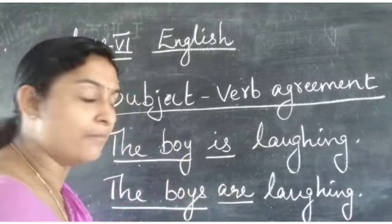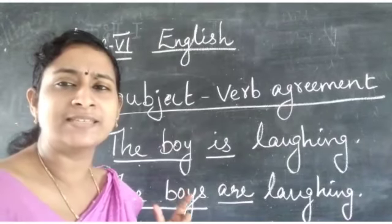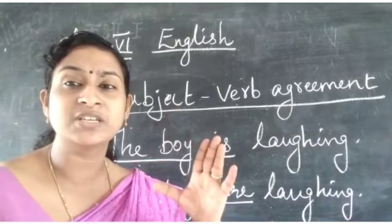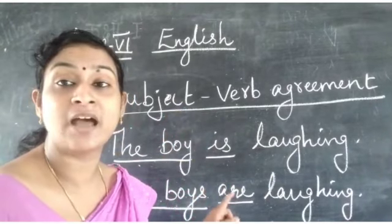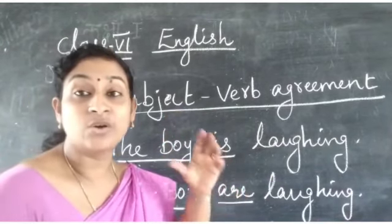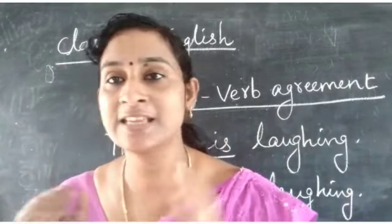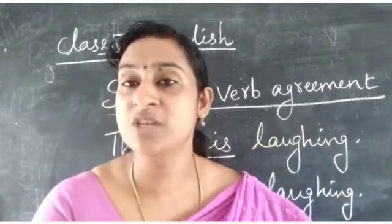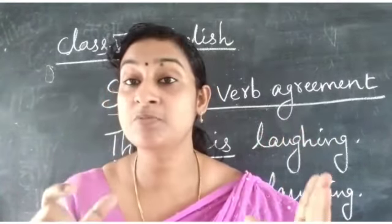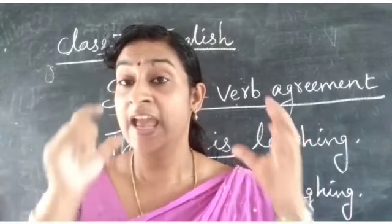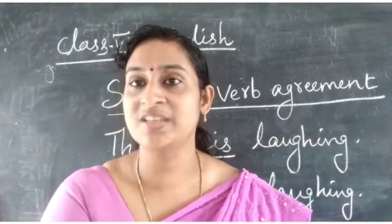Second example: 'The boys are laughing.' Here the subject is plural, so we change the verb to 'are.' So, when the subject is singular, the verb must be singular. When the subject is plural, the verb must be plural. That's Subject-Verb Agreement — a verb has to agree with its subject in number.